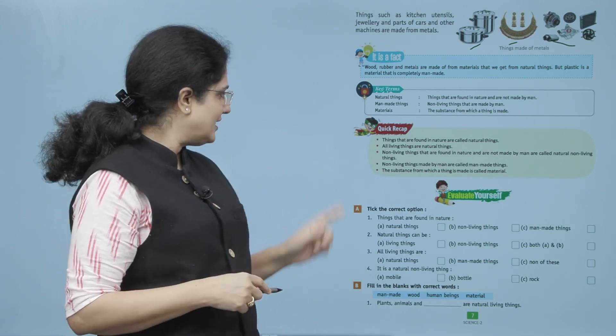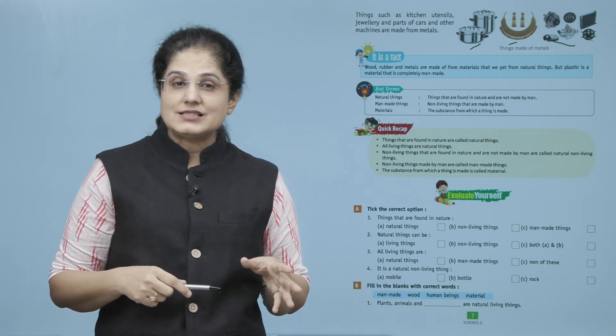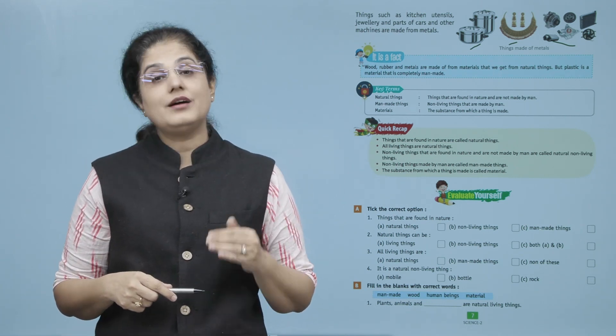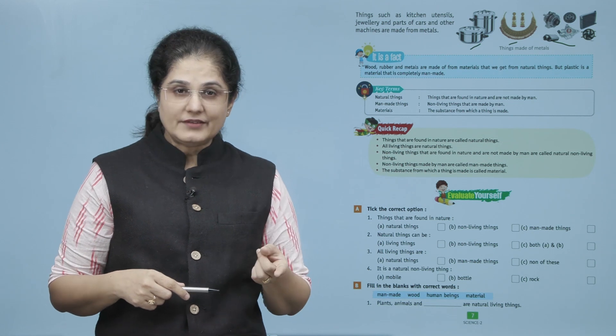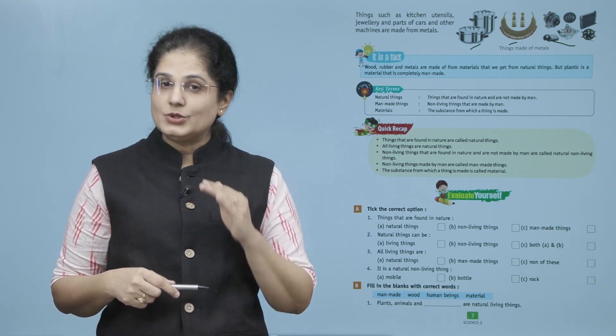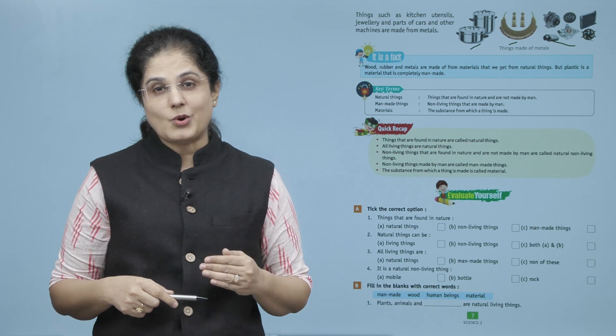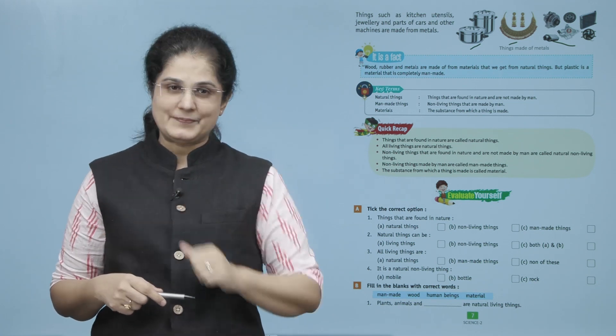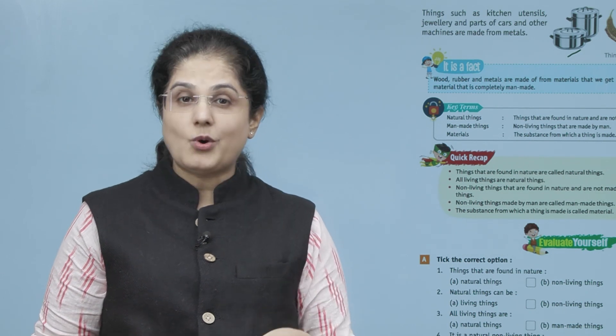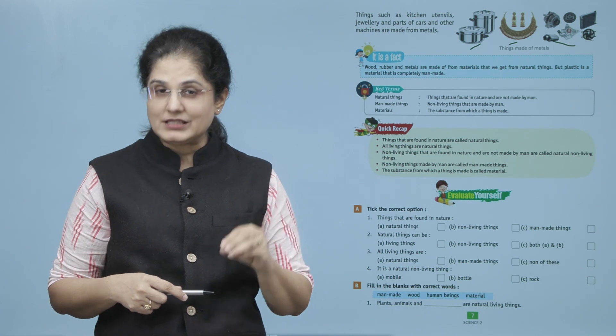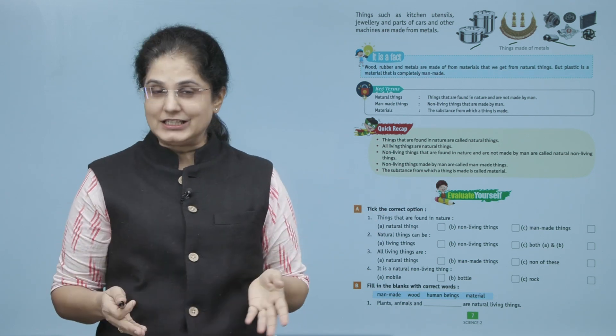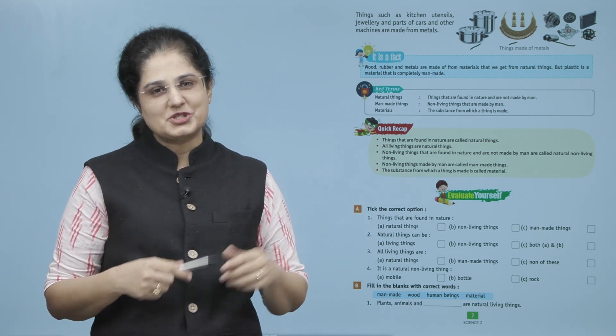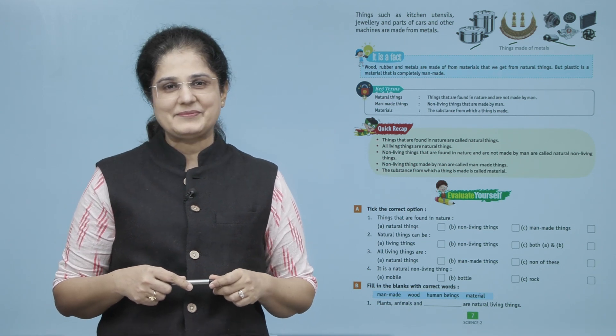So let's take a quick recap now. Things that are found in nature are called natural things. All living things are natural things. Non-living things that are found in nature and are not made by man are called natural non-living things. Non-living things made by man are called man-made things. The substance from which a thing is made is called material. So I hope that this chapter is clear to all and answering questions based on this chapter will now be easy.